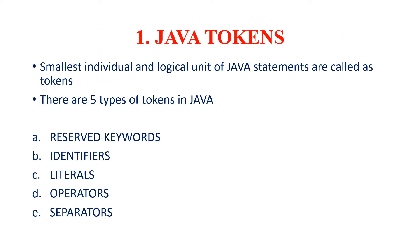First one is Java Tokens. Normally, what are tokens? Tokens are the smallest individual and logical unit of Java Statements. There are five types of tokens in Java. They are reserved keywords, identifiers, literals, operators and separators. We will see all these types of Java tokens in the forthcoming slides.